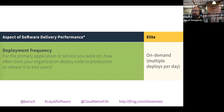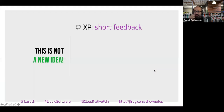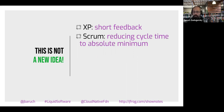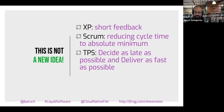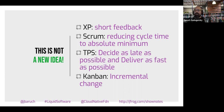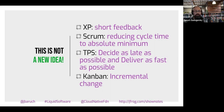This is not a new idea. Extreme programming in 1998 advocated for short feedback loops and releasing faster. Scrum reduced cycle time to an absolute minimum. The Toyota production system says decide as late as possible and deliver as fast as possible. Kanban promotes incremental change and smaller batches. All of these point to releasing faster, which is why 20% of the industry already successfully does that.